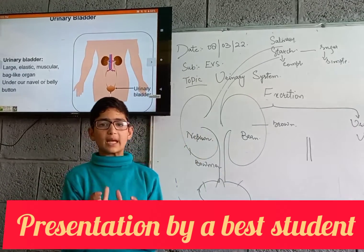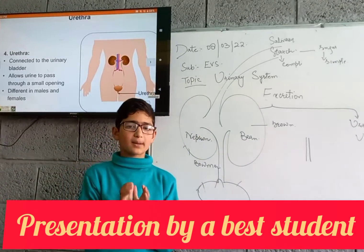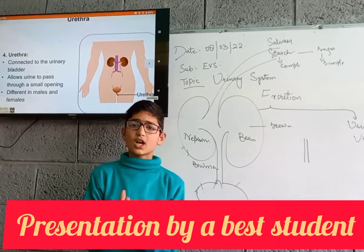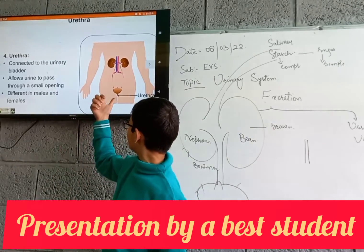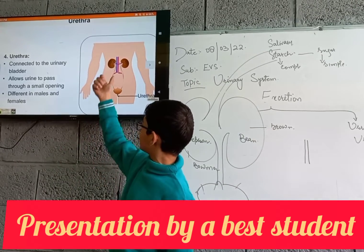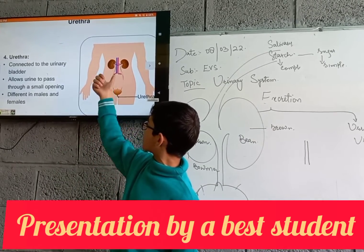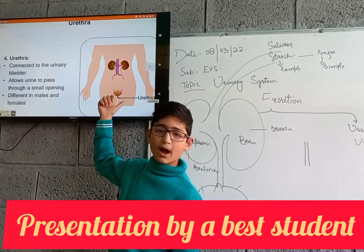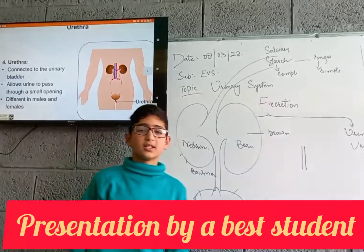The fourth part is the urethra. The urethra is a tube-like, pipe-like structure from which the toxic waste is thrown out of our body. Thank you.